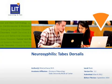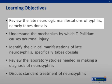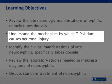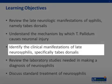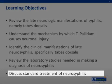Today we will be discussing neurosyphilis in one of its late manifestations, tabes dorsalis. The learning objectives of this presentation will include reviewing the late neurologic manifestations of syphilis, understanding the mechanism by which Treponema pallidum causes neuronal injury, identifying the clinical manifestations of late neurosyphilis, reviewing the laboratory studies needed in making a diagnosis of neurosyphilis, and discussing the standard treatments of neurosyphilis.